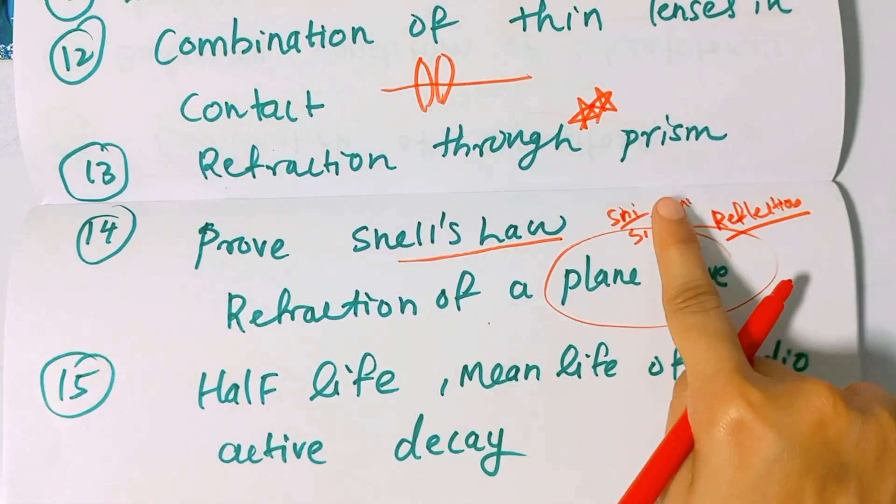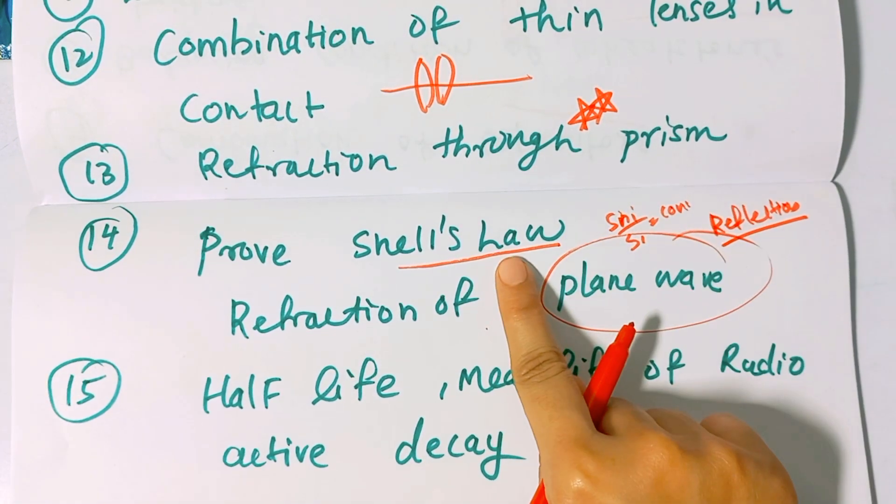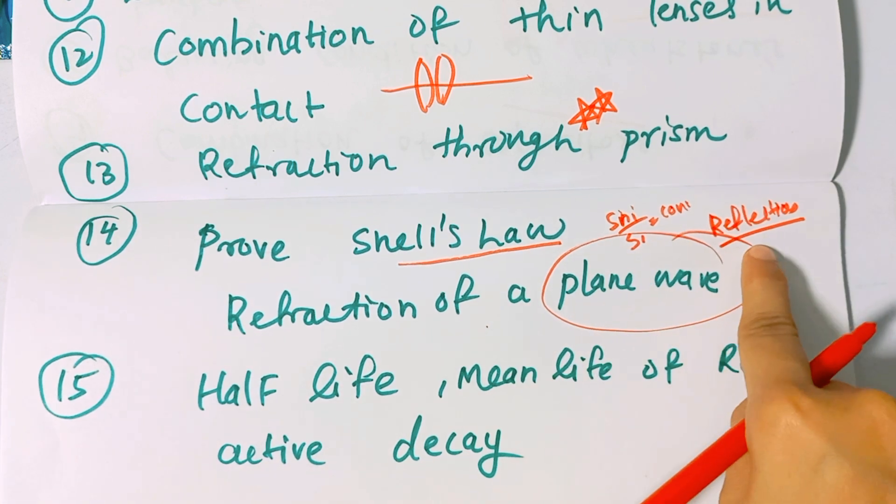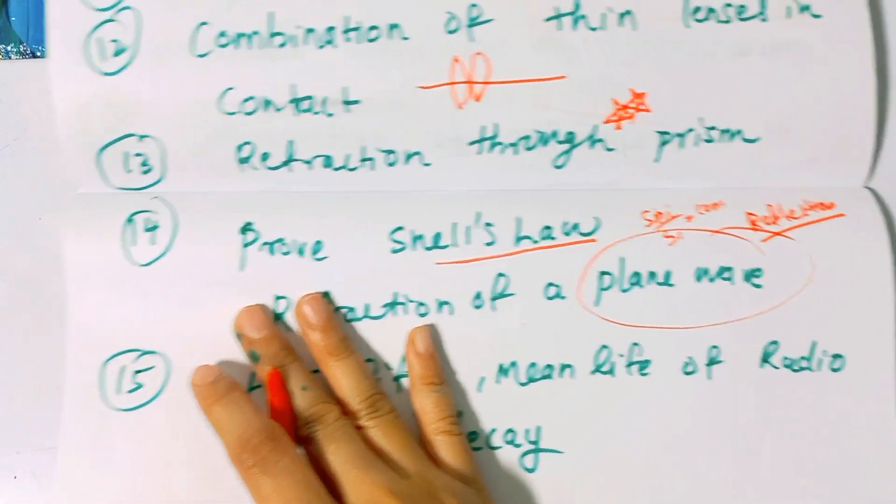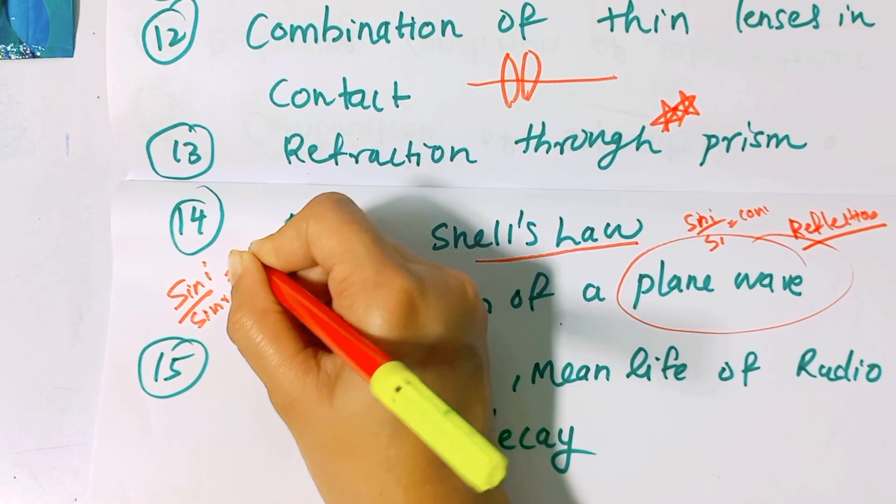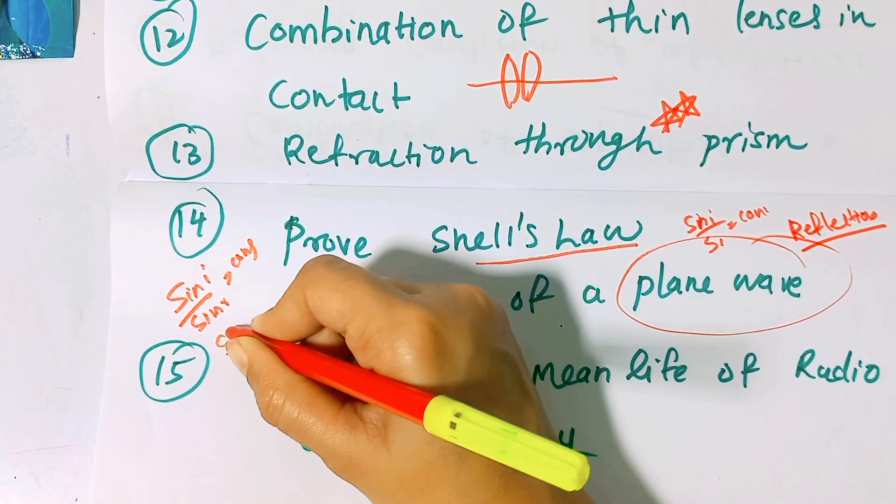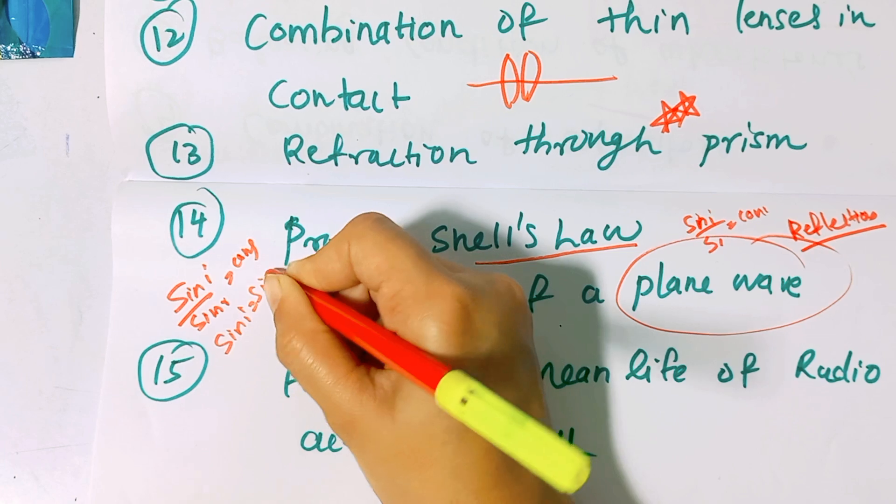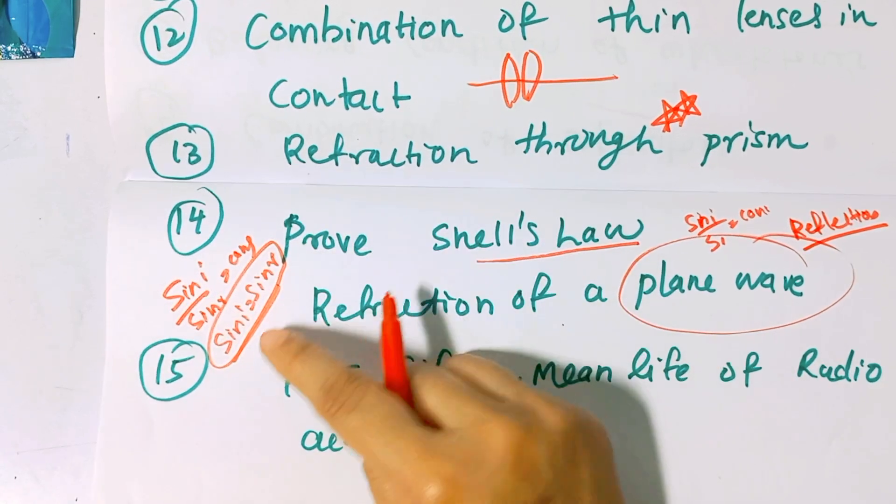In wave optics, there are two derivations: Snell's law where sin i by sin r equals constant, and law of reflection where sin i equals sin r.